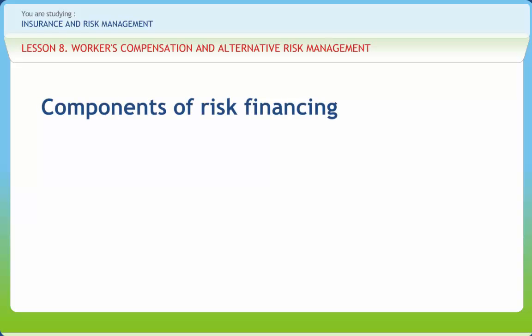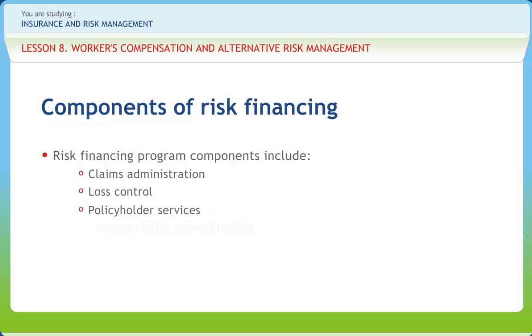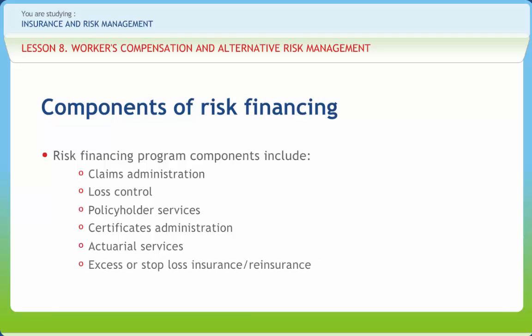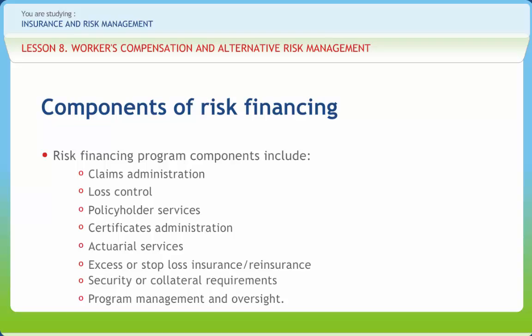The use of alternative risk financing in the form of a high-deductible program, self-insurance, or captive insurance requires careful coordination of program components. The required services can be purchased independently from vendors or bundled by the insurer that provides excess or stop-loss insurance. Risk financing program components include claim administration, loss control, policyholder services, certificates administration, actuarial services, excess or stop-loss insurance or reinsurance, security or collateral requirements, and program management and oversight. Administrative demands are accentuated when purchasing unbundled services, but doing so often gives greater control and cost savings.